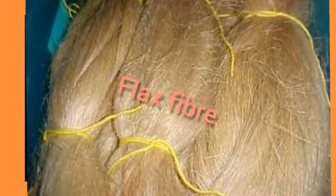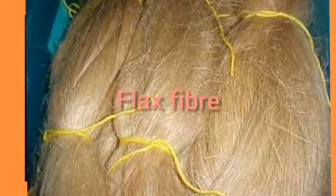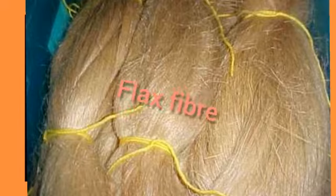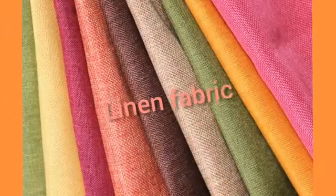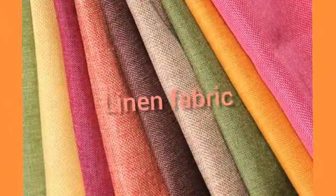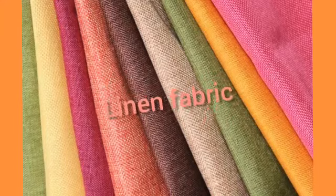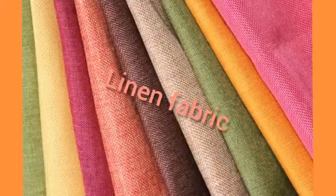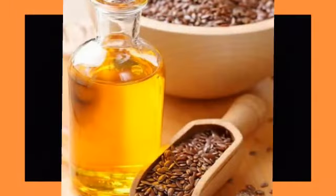Next is flax. Flax is the strongest plant fiber, obtained from the stem of the plant. It is one of the first fibers to be used in the textile industry. Flax fibers are used in making linen fabric, which is valued for its exceptional coolness in hot weather. Its seeds are processed to obtain linseed oil, which is used in making paints and varnishes.